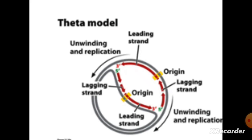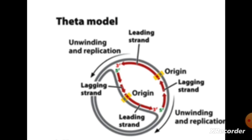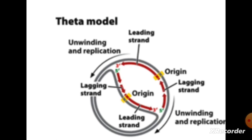DNA replication. As we know, replication is a semi-conservative method. This was found in 1957 by Meselson and Stahl in an autoradiography experiment. Autoradiography is a technique that uses radioactive sources or X-ray film to visualize molecular fragments that are radioactively labeled.